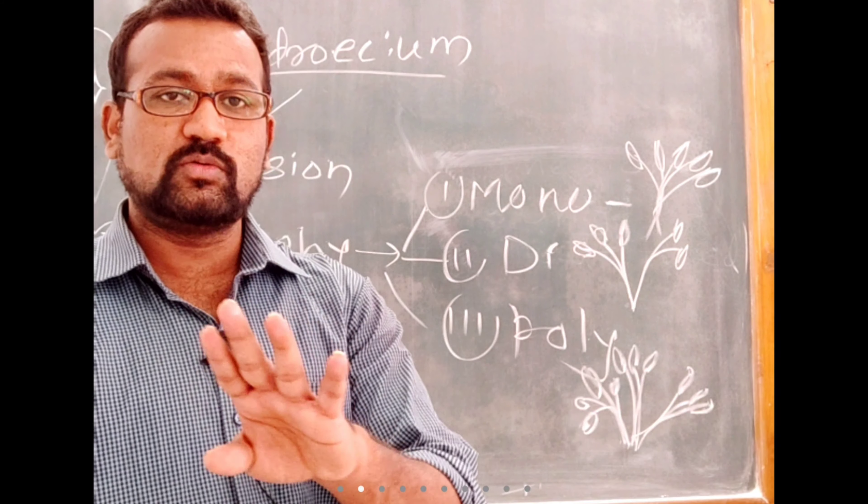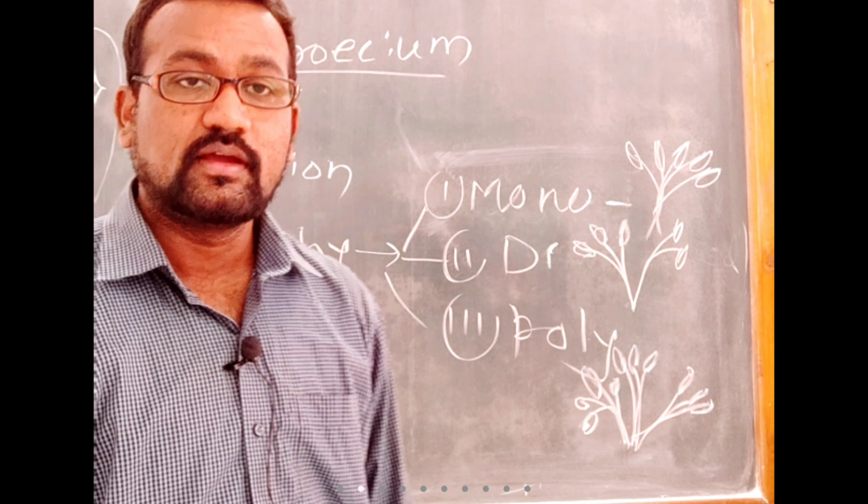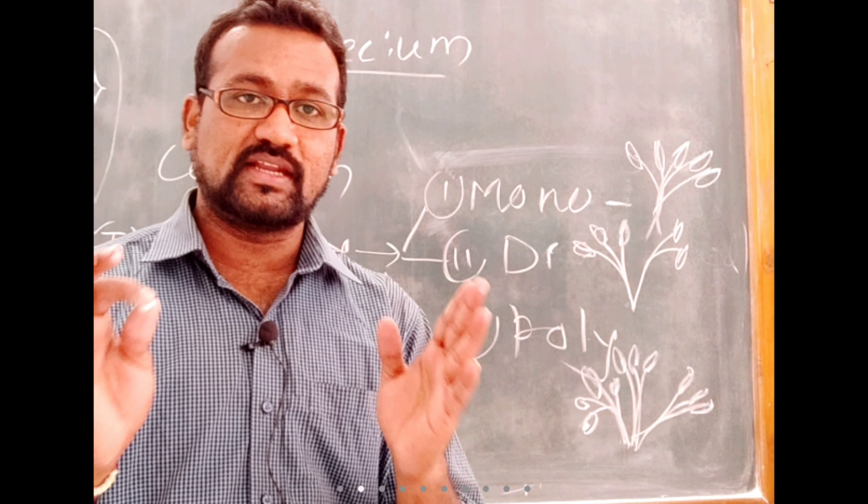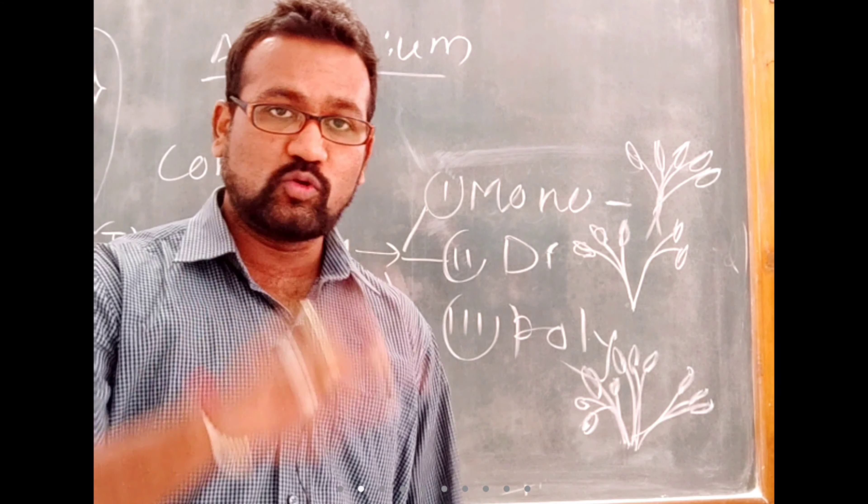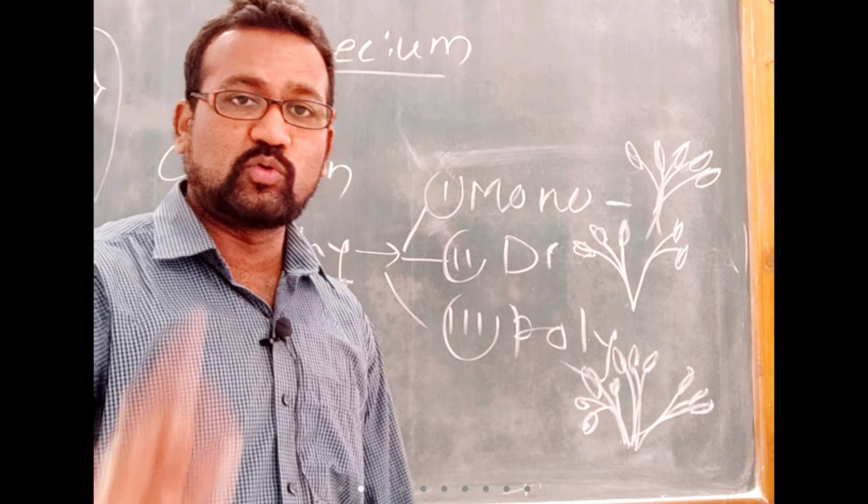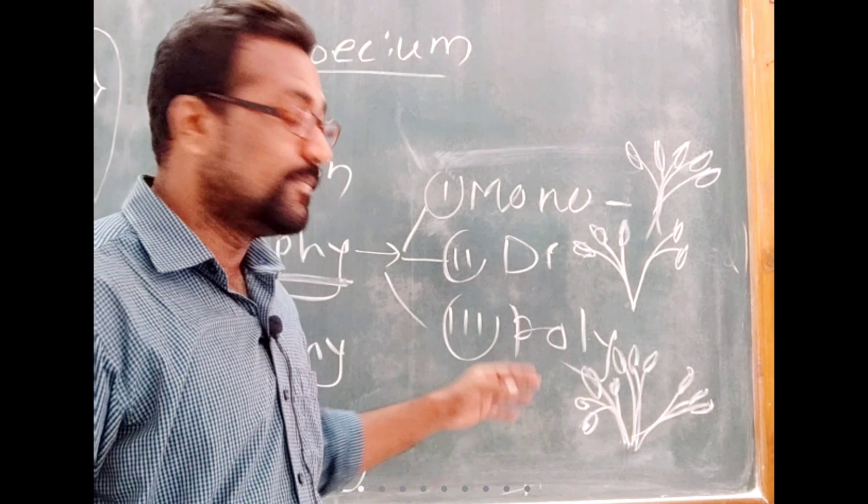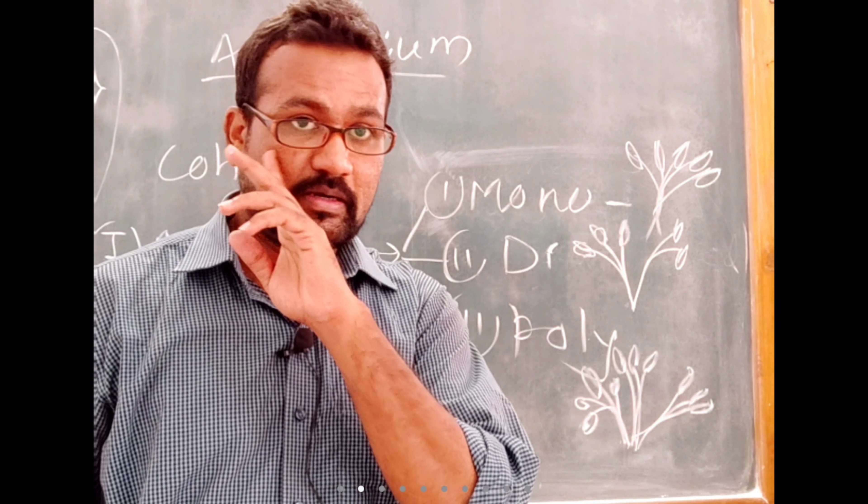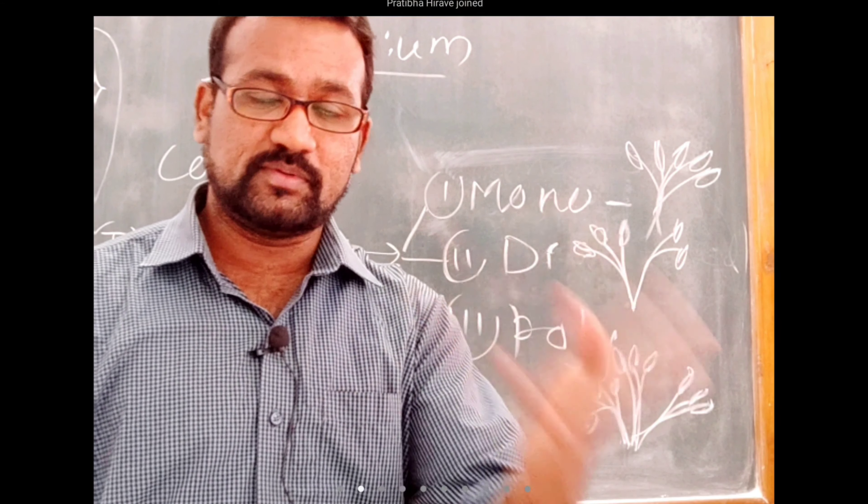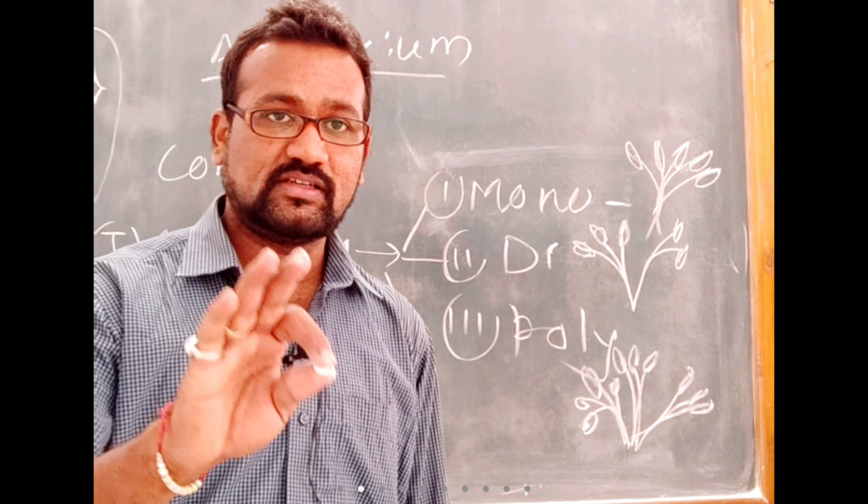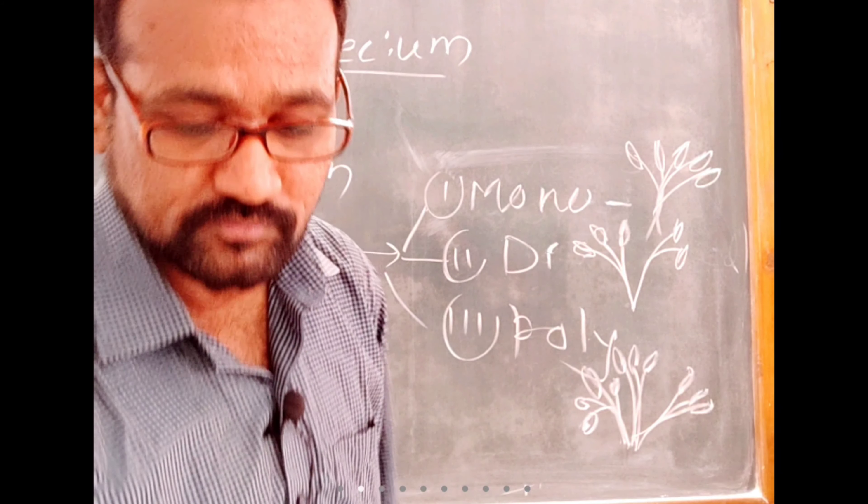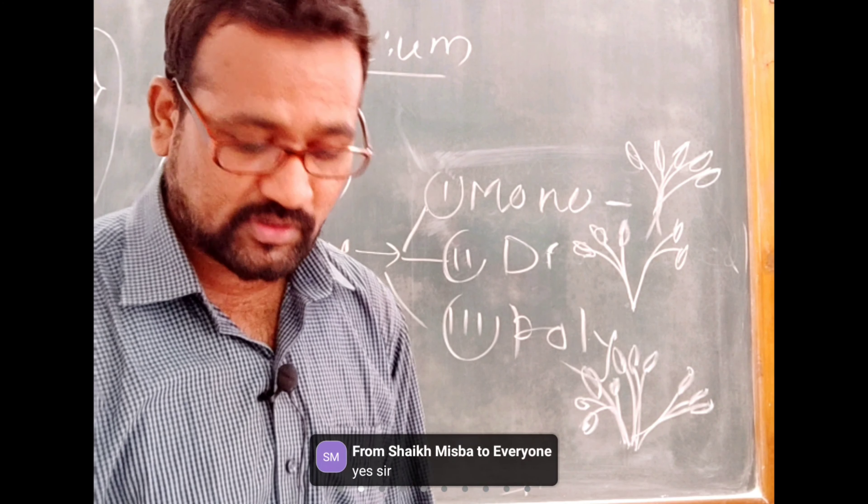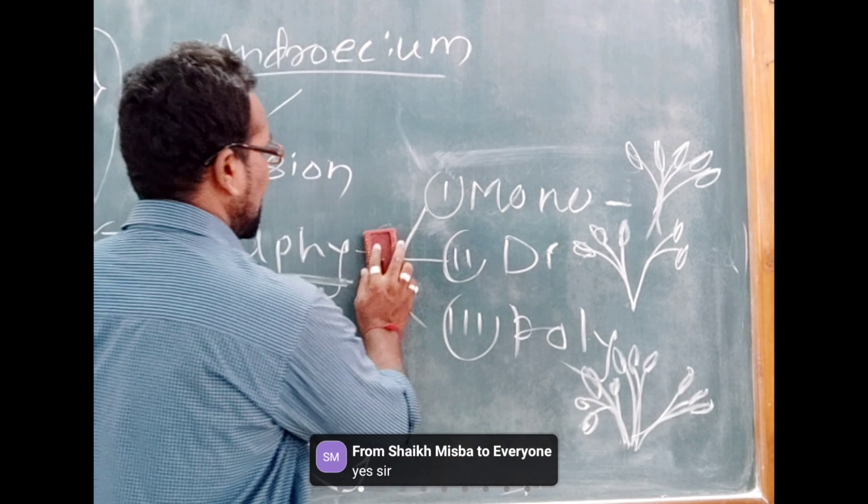One group contains four stamens, one group contains three stamens, another group contains three stamens. I think you must have understood what I am trying to tell you here. It is that when flower contains stamens and these stamens create groups - if only one group is there, monoadelphus; if two groups are there, diadelphus; if many groups are there, polyadelphus. If three groups are there, triadelphus; four groups are there, tetraadelphus. So we have seen Adelphi.